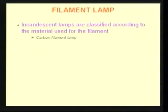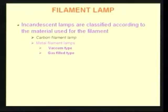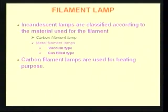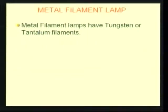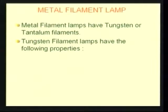Normally there are two types of filament lamps: one is carbon filament lamp, and the other is metal filament lamp. In metal filament lamps there are again two types: vacuum type and gas filled type. Carbon filament lamps are generally used for heating purposes, whereas metal filament lamps are used for lighting purposes. Metal filament lamps have tungsten or tantalum filaments. We commonly see these tungsten filament lamps in our houses, technically known as incandescent lamps.